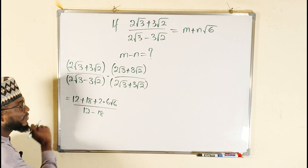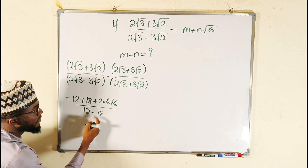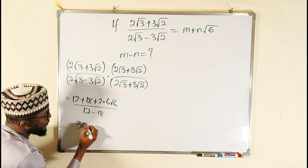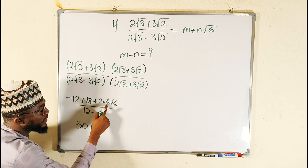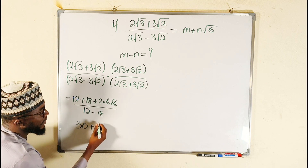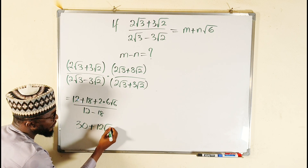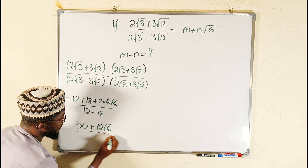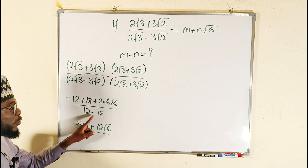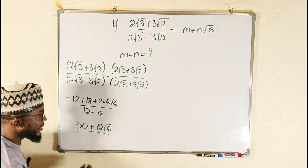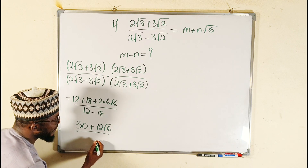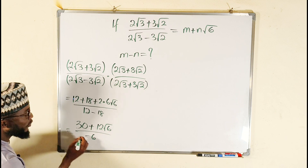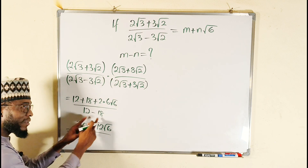If you add 12 and 18, you get 30. So the numerator is 30 + 12√6. Dividing by the denominator: 12 minus 18 is negative 6.